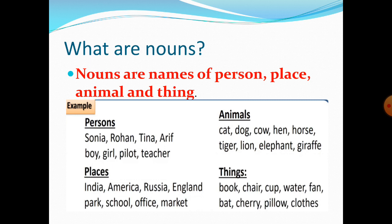Now let's see some examples of places. India, America, Russia, England — they are the names of places and they are proper nouns. Park, school, office, market — they are also the names of places, but they are common nouns.